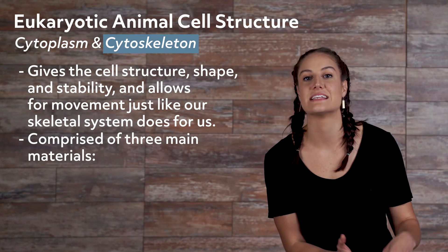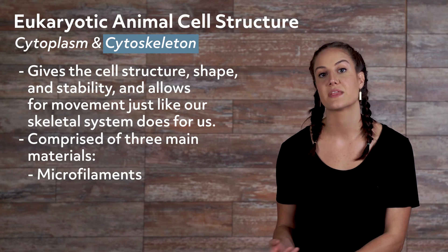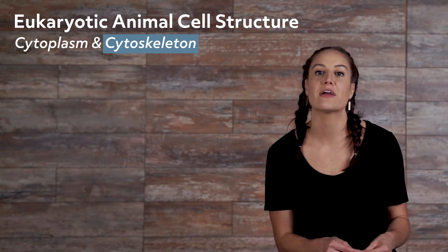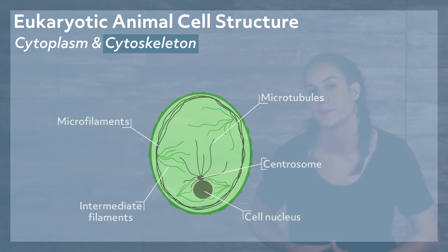The cytoskeleton is comprised of three main materials: microfilaments, intermediate filaments, and microtubules. Microfilaments are, like their name suggests, tiny filaments that look like thin threads. Intermediate filaments are a little larger than microfilaments, and the largest of the three are the microtubules, which look like microscopic-sized tubes.